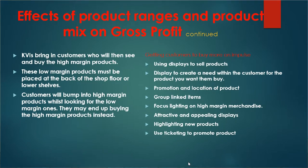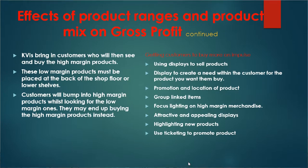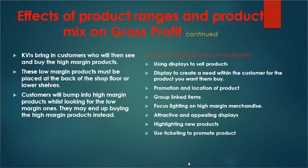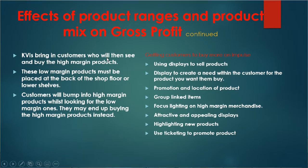Let's look at the effects of product range and product mix on gross profit. We have products called non-value items. These products bring in customers — like in a shop, customers come in just to buy bread or margarine. These products bring people in, and then the customers that have come into your shop are going to see and buy the high margin products.